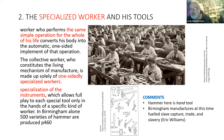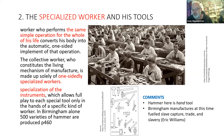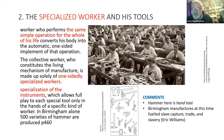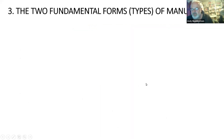What Marx doesn't say — though it is important when talking about Birmingham in this period — is the connection to what the products were actually used for. To a large degree they were used for the enslavement of Africans and other oppressive purposes.